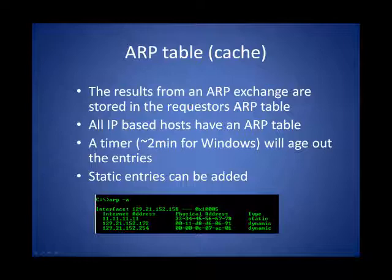Any node on a network that has an IP address also has an ARP table. If you send out an ARP request and get an ARP reply back, you populate this table so the next time you talk to the node, you don't have to do the whole thing again. The idea is to improve efficiency and reduce the amount of network traffic. The entries do time out — in the case of Windows, it's about two minutes, though every operating system is a little different. You can also add static entries to the table.